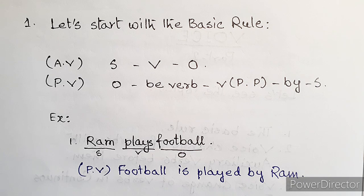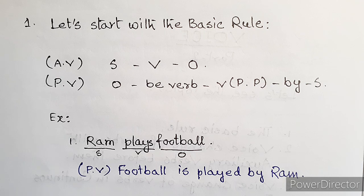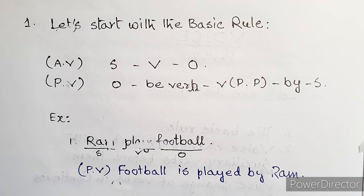Let's start with the basic rule. In active voice, the general pattern of a sentence is S-V-O: first comes the subject, then the verb, and finally the object. In passive voice, first comes the object, then a be-verb, then the past participle form of the main verb, then 'by', and finally the subject. The be-verb will be according to the tense of the main verb and the number and person of the object.